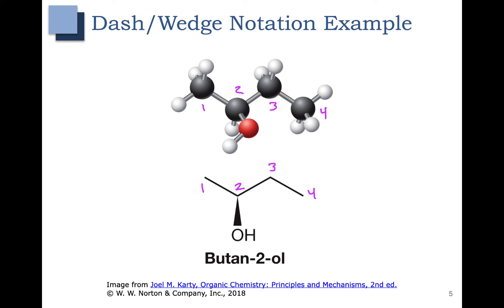If you want, you can draw the hydrogen in as a hashed line on either this side or the other side. As long as the hashed and wedge lines are together, that implies the hydrogen is in the back and the OH is in the front. What you absolutely cannot do is draw a hashed line on the opposite side of the OH — that's very bad. Build a model to convince yourself why that doesn't work.